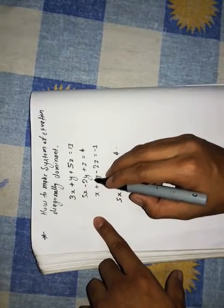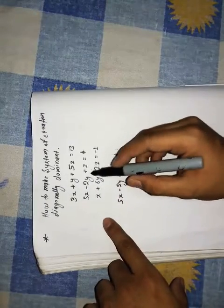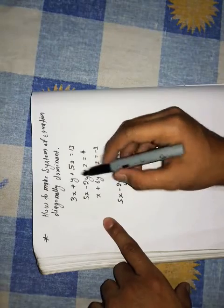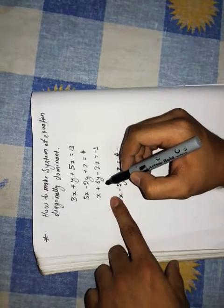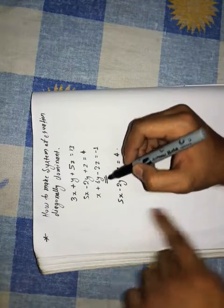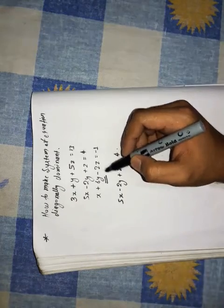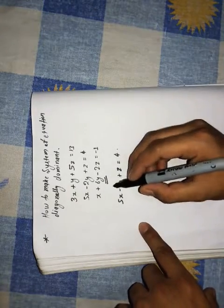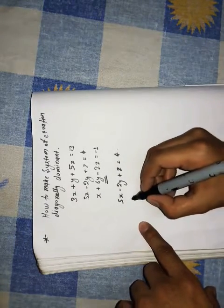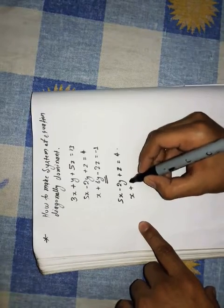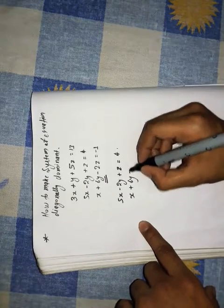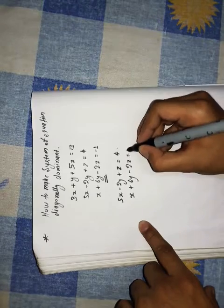Since we have to see it diagonally, we can see the second one which is greater. It can be written as x plus 6y minus 2z equals minus 1.